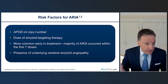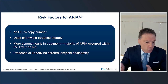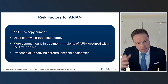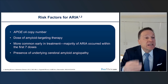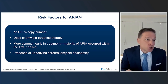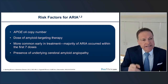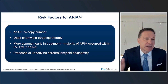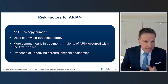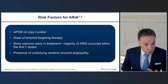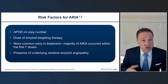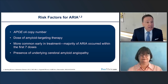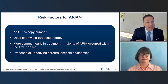What are the risk factors for developing ARIA when being treated with anti-amyloid agents for mild Alzheimer's disease? The main risk factor is the number of copies of the ApoE4 allele you carry. Second is the dose of agent — the higher the dose, the more likelihood of complications. These ARIA complications occur most commonly in the early phases of treatment, with the majority occurring within the first seven doses. Another risk factor is the presence of cerebral amyloid angiopathy — a condition where there is significant amyloid deposition within the brain vasculature, making ARIA very likely when amyloid is removed.